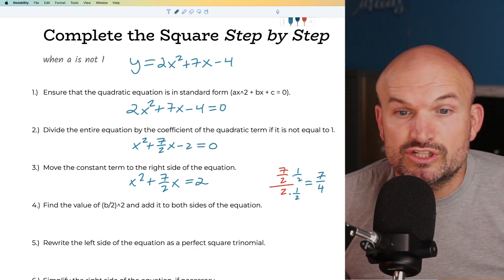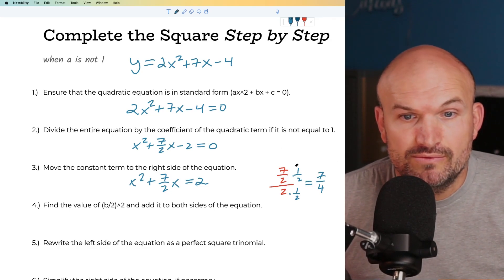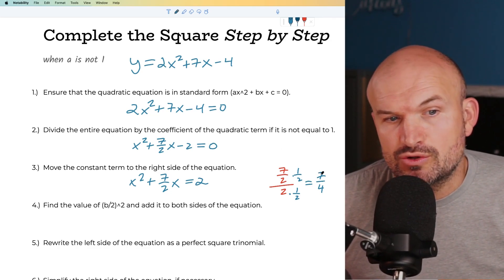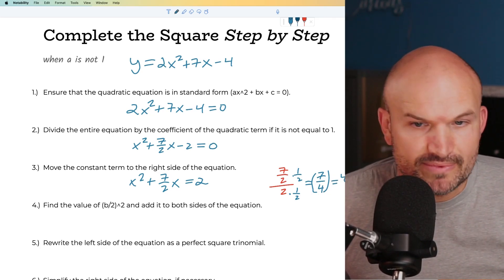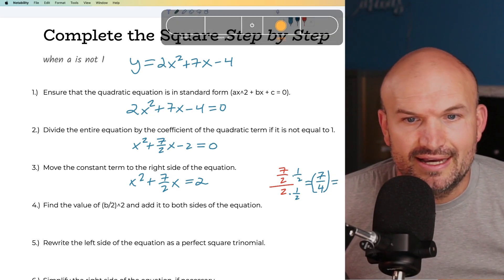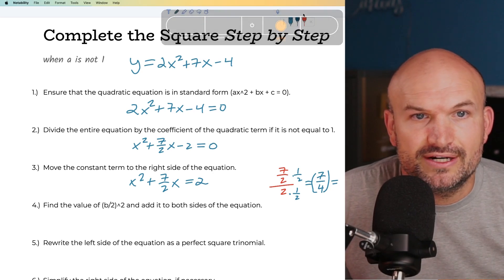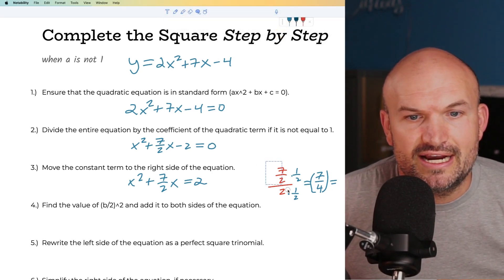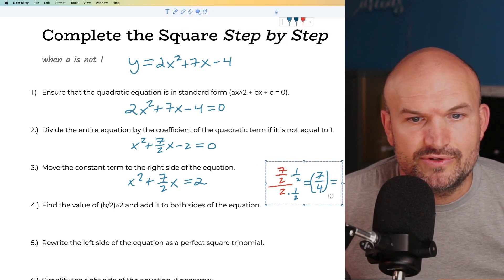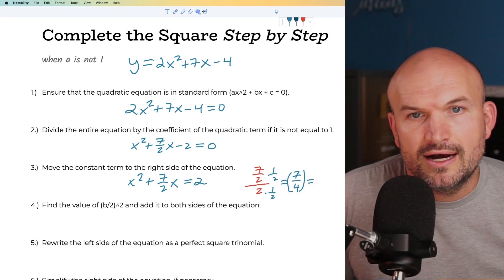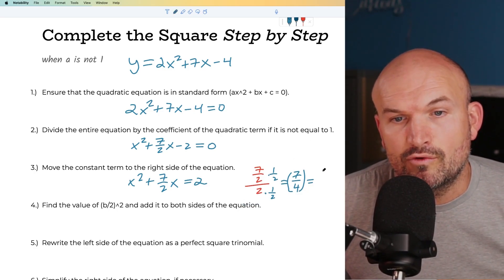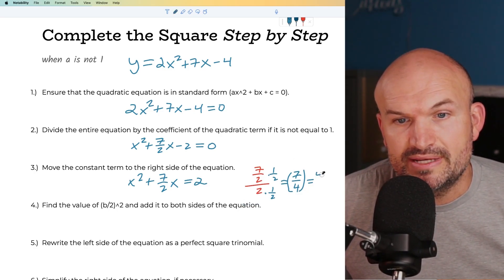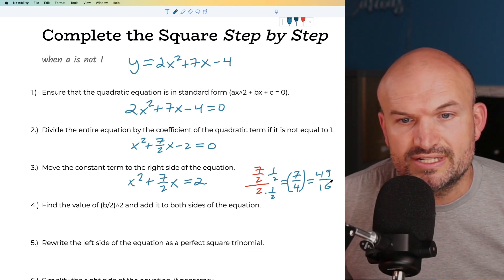Now we go ahead and square that value. When we square 7/4, we get 49 over 4 squared, which is 16 — so 49 over 16.